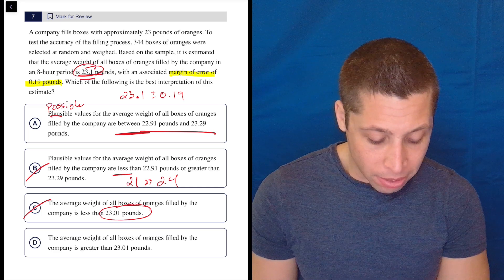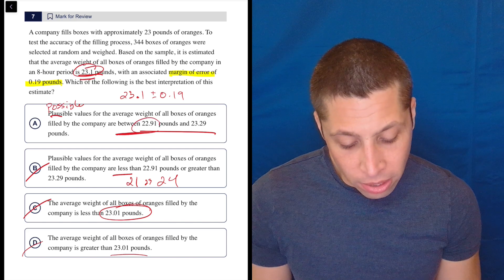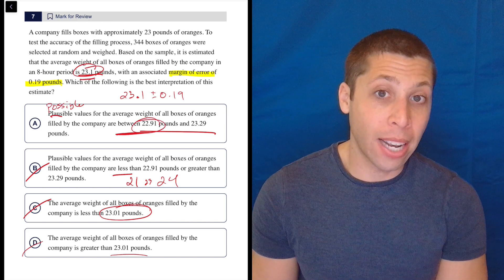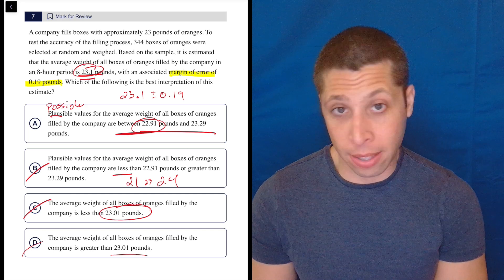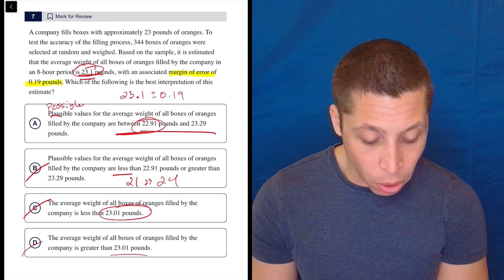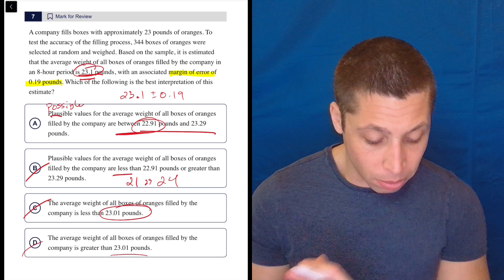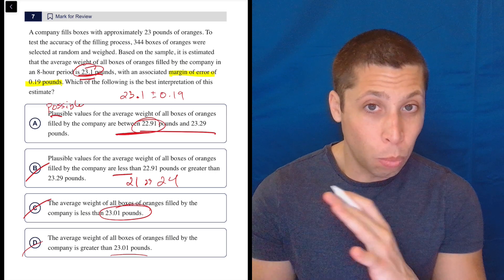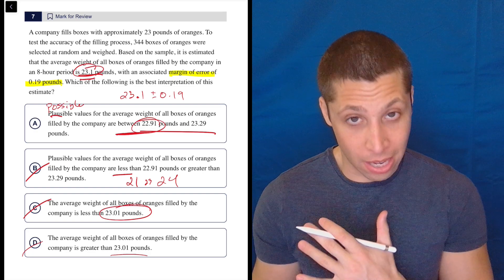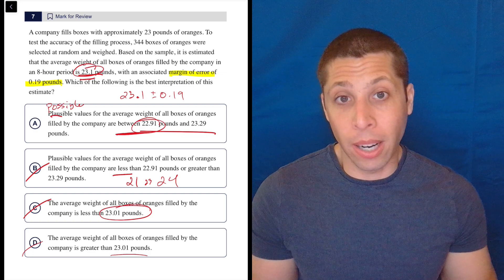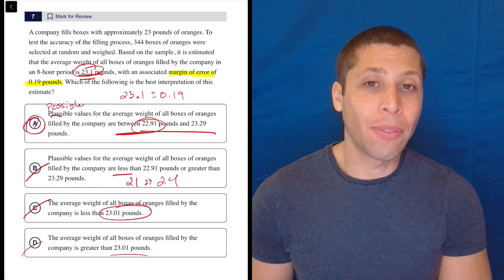The average weight of all boxes of oranges filled by the company is greater than 23.01, so it's the same problem. Notice now when I go back to choice A, again, assuming the calculation is correct, 22.91 is the kind of lower estimate. And so 23.01 is higher than that estimate. So there's still some kind of – there's about 0.1 worth of orange weight that is not included in choice D, so why not, right? It doesn't matter. It's got to include that. I don't know why we're excluding it. So A is definitely the answer.